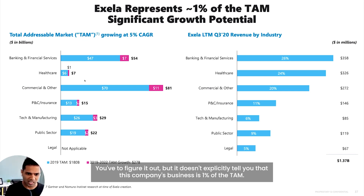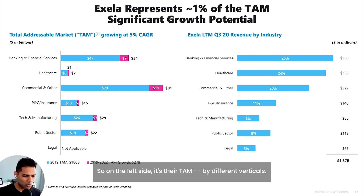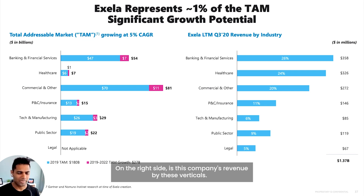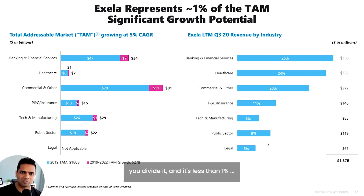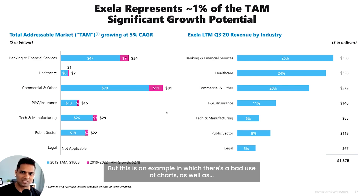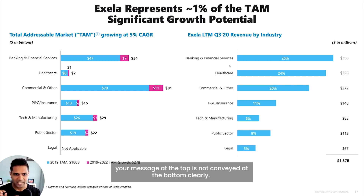You have to figure it out, but it doesn't explicitly tell you that this company's business is 1% of the TAM. So on the left side, it's their TAM by different verticals. On the right side is this company's revenue by these verticals. And you can figure it out — this is 180 billion, this is 1.37 billion. You divide it, it's less than 1%. But this is an example where bad use of charts, as well as the message on the top, is not conveyed at the bottom clearly.